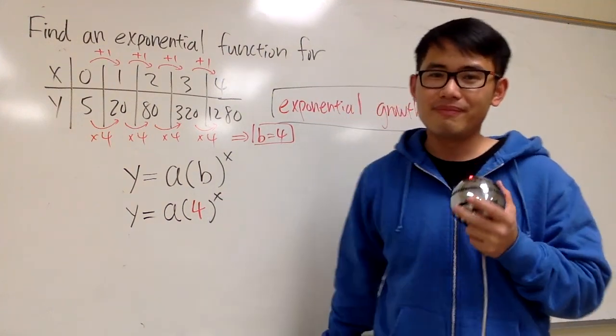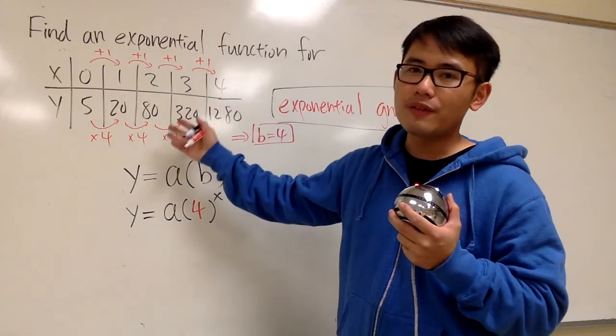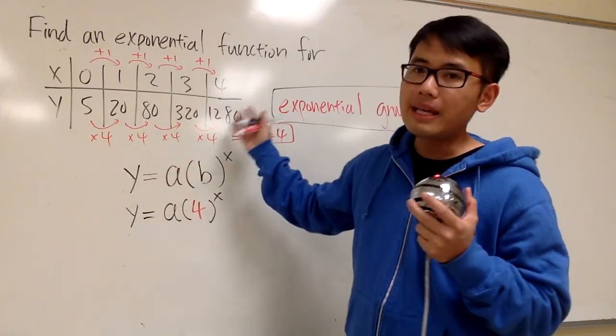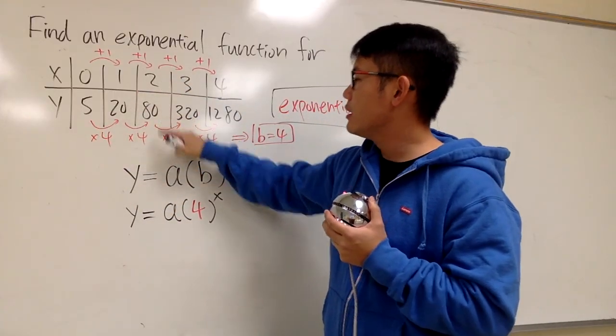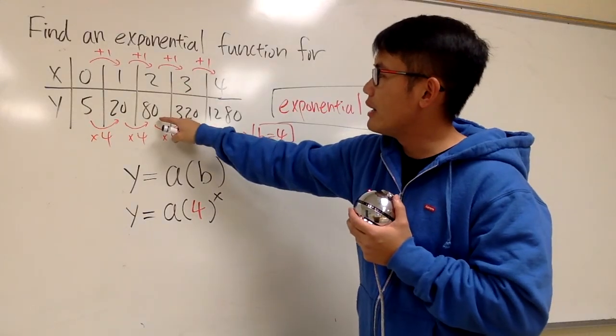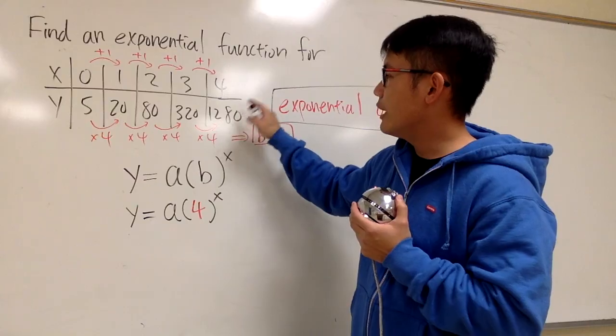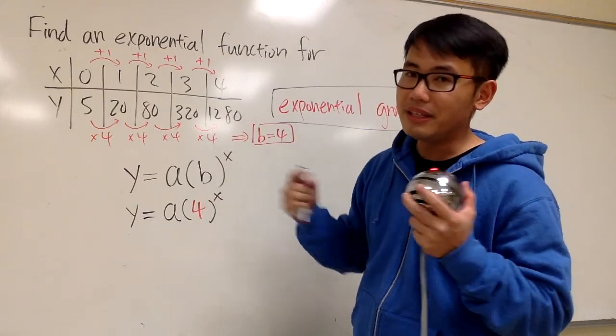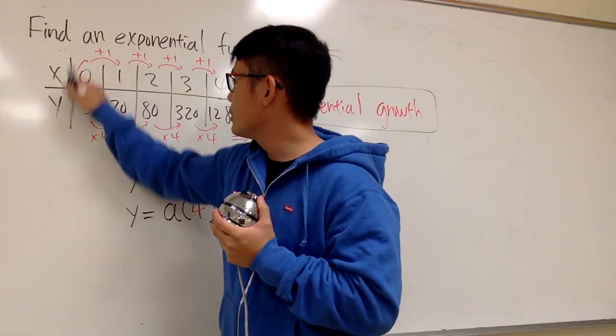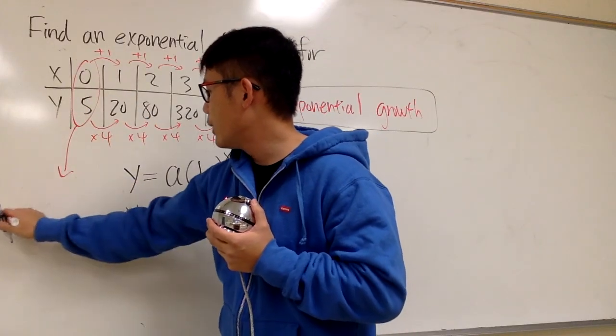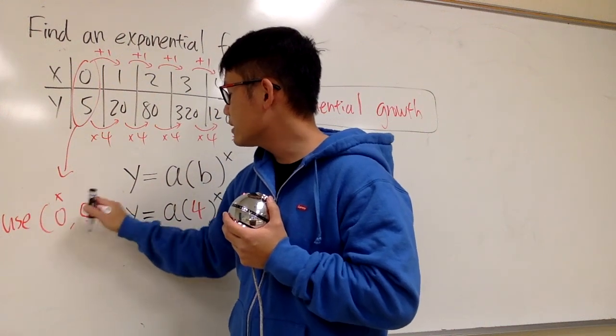Well, one more thing will be done. What is the a value? Well, we have the x and y values right here. Pick a pair. Any one. I can use 2 comma 80, 2 for x, y is 80. Or I can use 4 comma 1280. Up to you. But the easiest number to use will be this one, 0 and 5. So I'm going to look at this and drag it down. I will use 0 comma 5. 0 for x, y is 5.